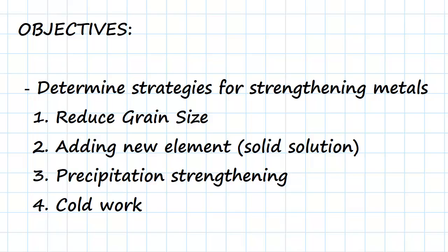Hi, everybody. The objectives of this video are to determine the strategies for strengthening metals. These are: firstly, to reduce the grain size; then we're going to have a look at adding new elements, so creating a solid solution; we're going to have a look at precipitation strengthening; and then finally, cold work.